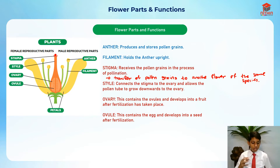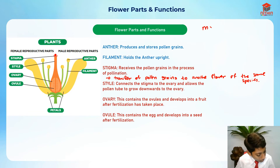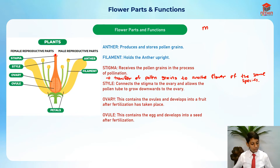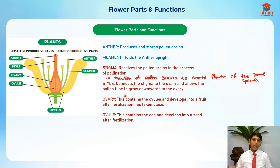This is a very common misconception: the male reproductive cell is not the pollen grain itself. The male reproductive cell is actually inside the pollen grain. So the correct way to say it is: the male reproductive cell inside the pollen grain fertilizes with the female reproductive cell in the ovule. That's how you explain fertilization.